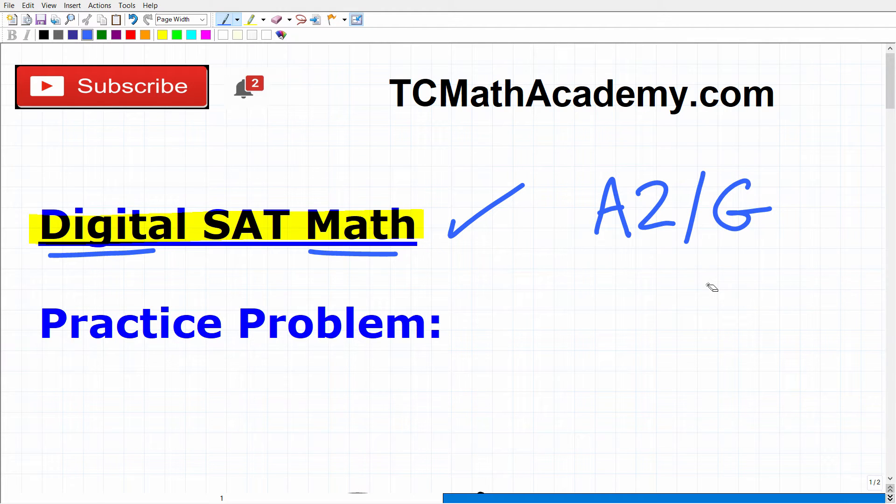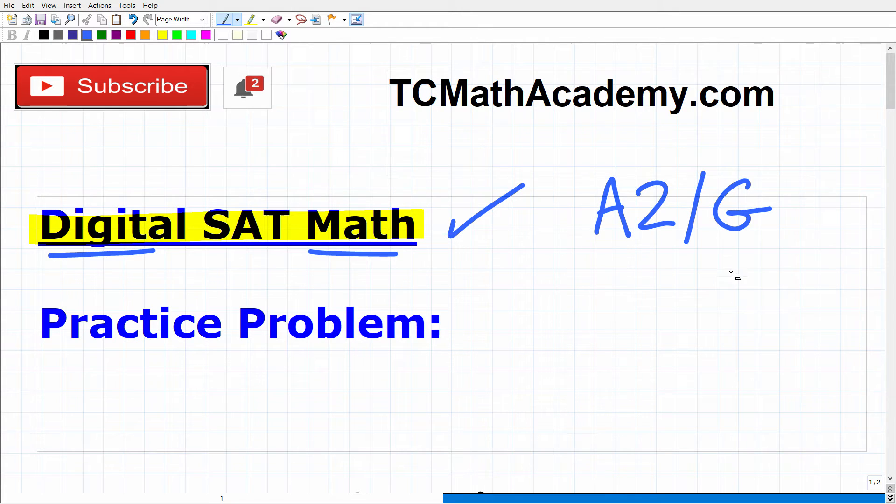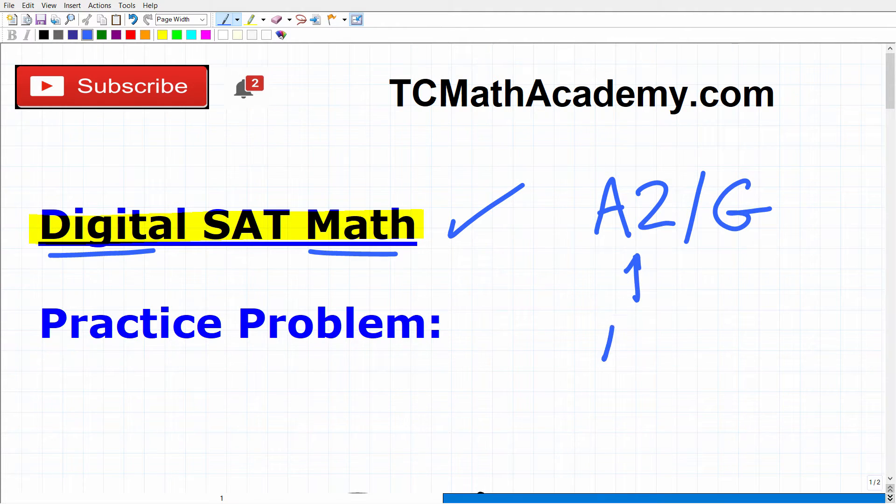Now, some of you out there may have taken Pre-Calculus or Calculus, and that is great. But for the most part, the majority of problems on the SAT can be solved with this level of math, Algebra 2 and Geometry. And of course, if you've taken Algebra 2, that means you have taken Algebra 1. Now, there is some advanced math beyond this that you could encounter on the SAT. But the vast majority of the math will be at this level.